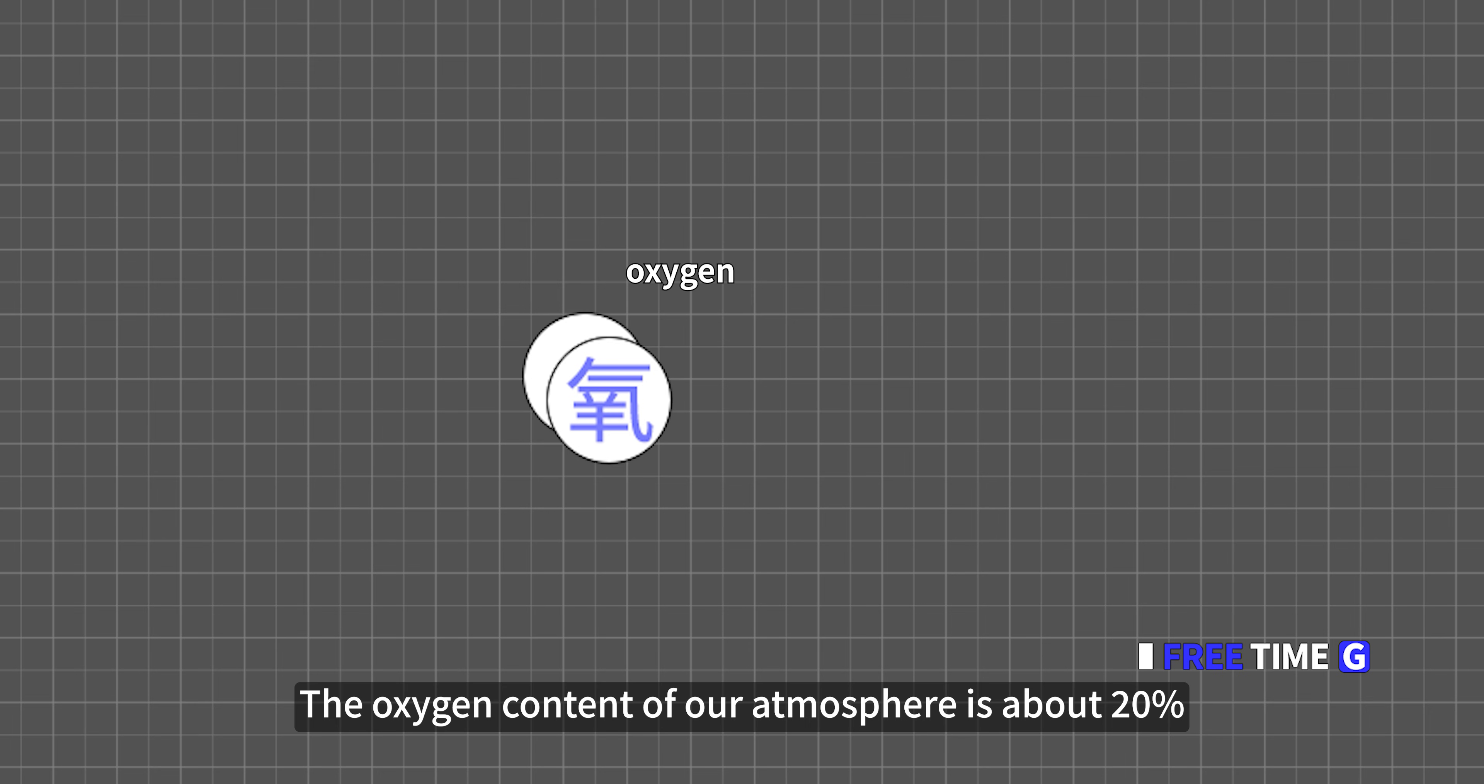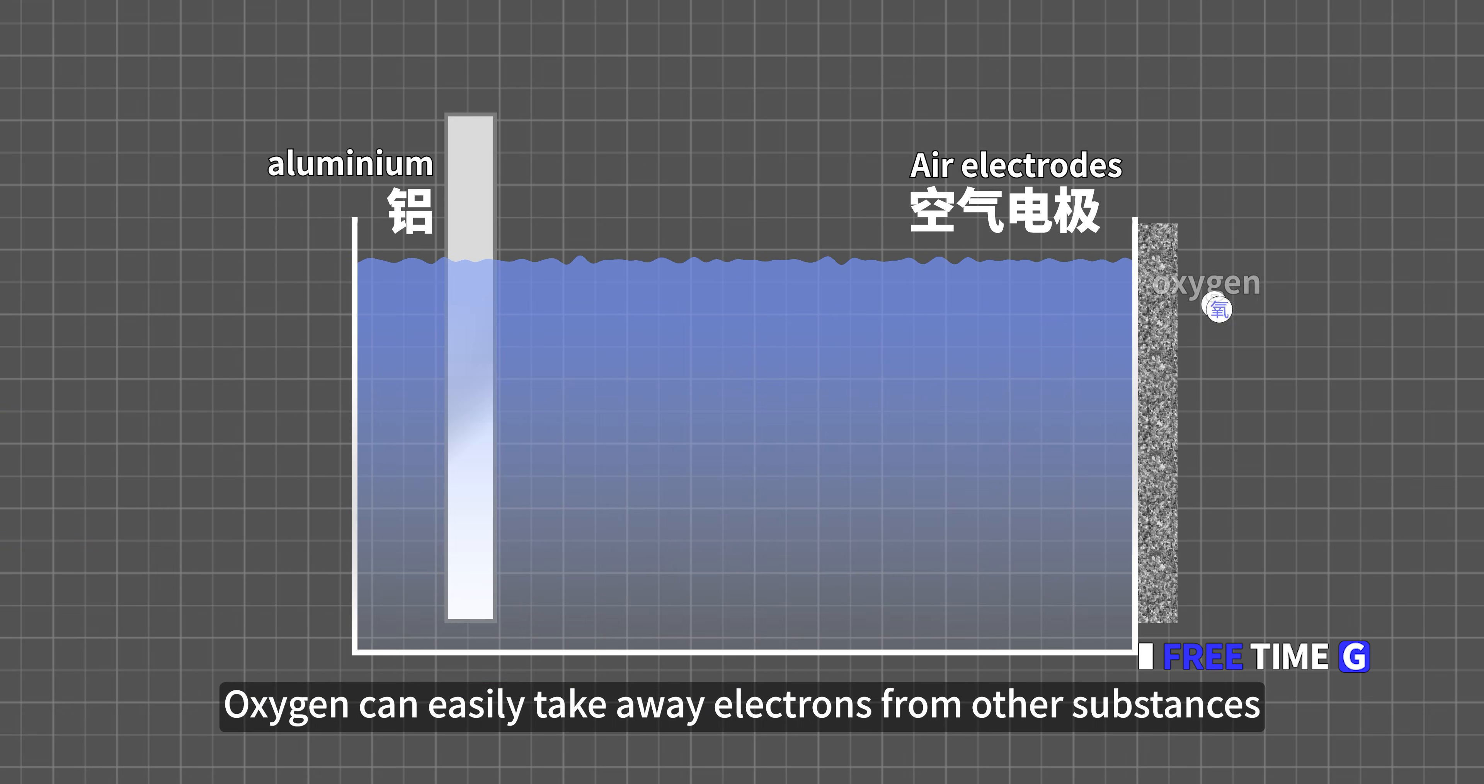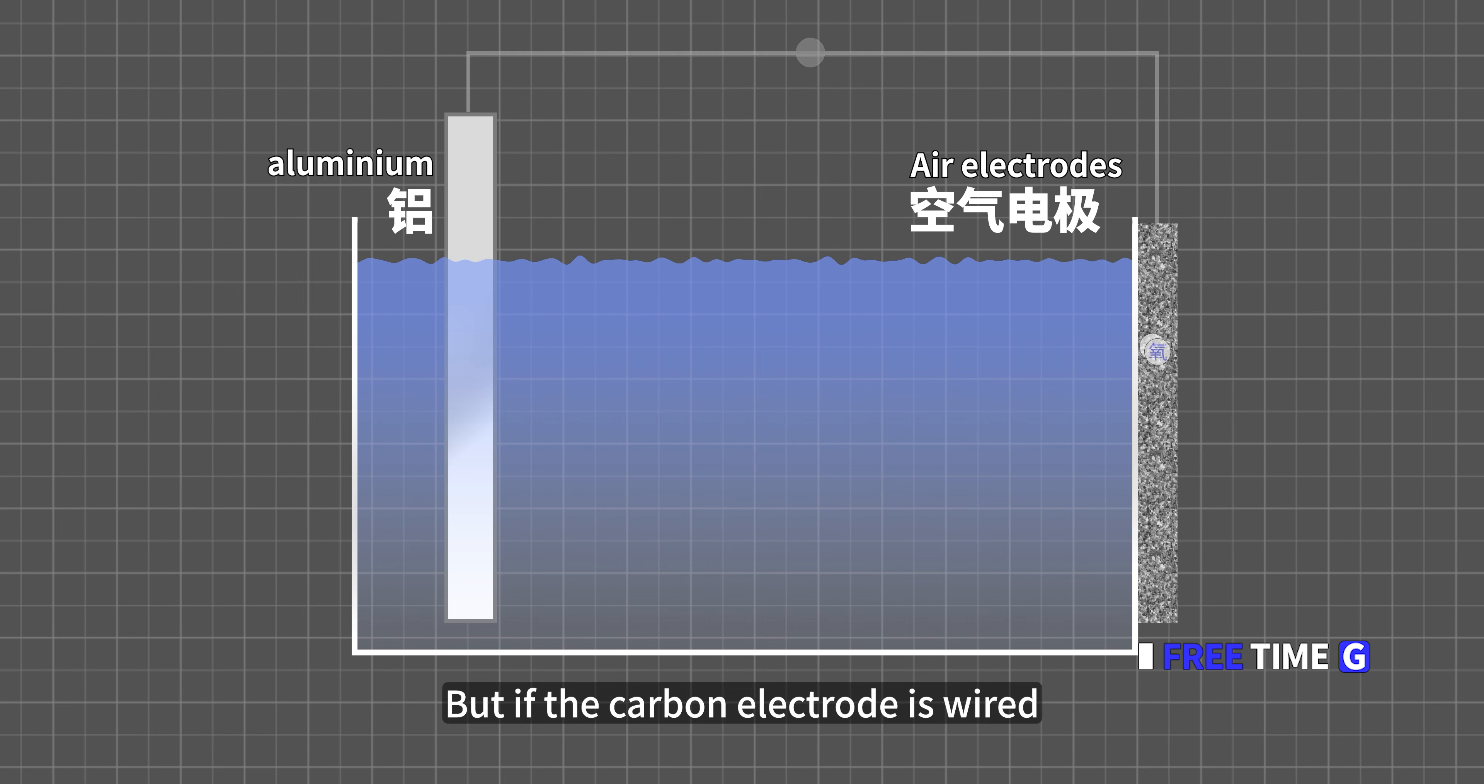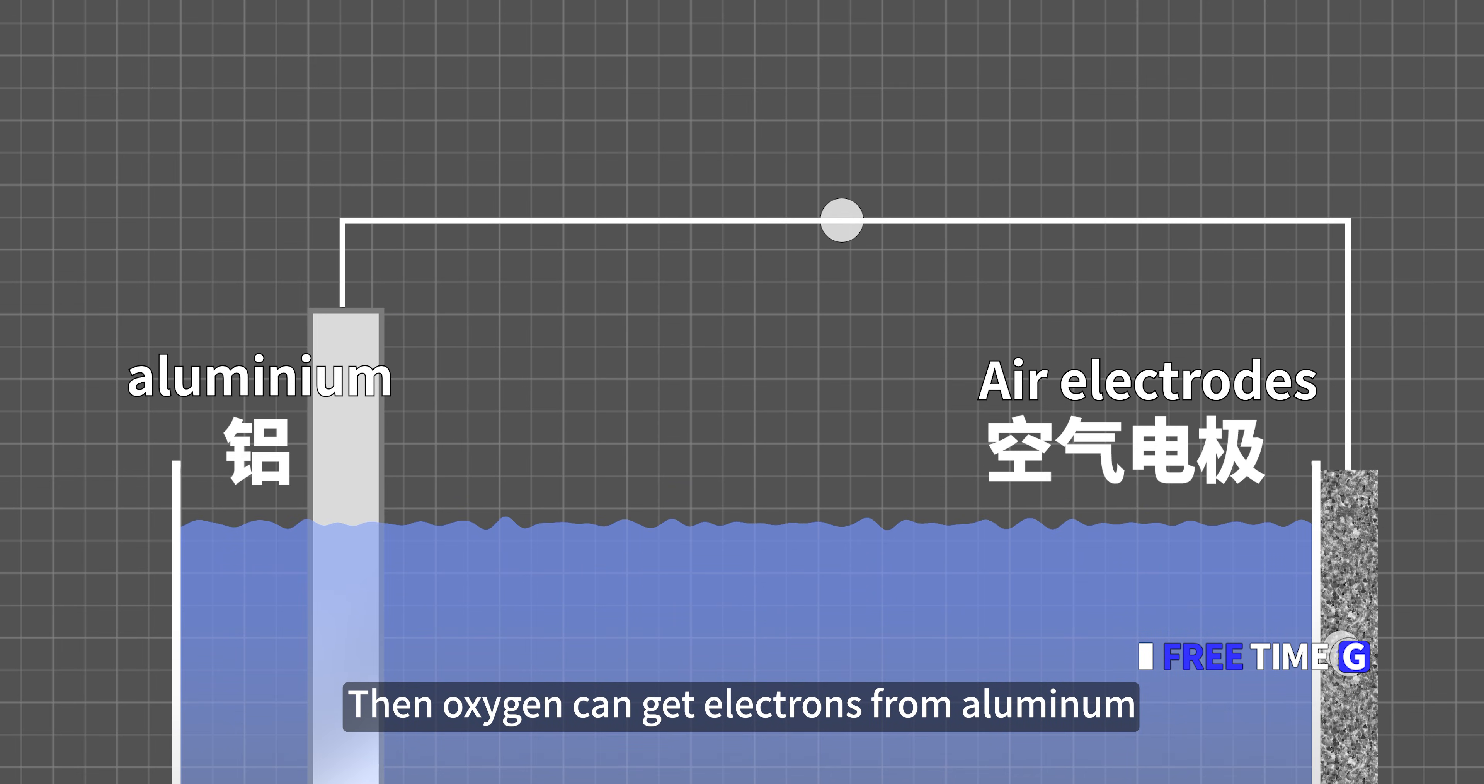The oxygen content of our atmosphere is about 20%. Oxygen can easily take away electrons from other substances. When oxygen penetrates into the carbon electrode, oxygen will try to occupy the electrons of the carbon atom. At room temperature, carbon does not share electrons with oxygen. But if the carbon electrode is wired, when connected to an active metal electrode, for example aluminum, it is more lively, easy to lose electrons. Then oxygen can get electrons from aluminum. You can think of oxygen as an electric pump, try your best to absorb electrons from aluminum. The moment of electrons creates an electric current. That is what we call electricity.